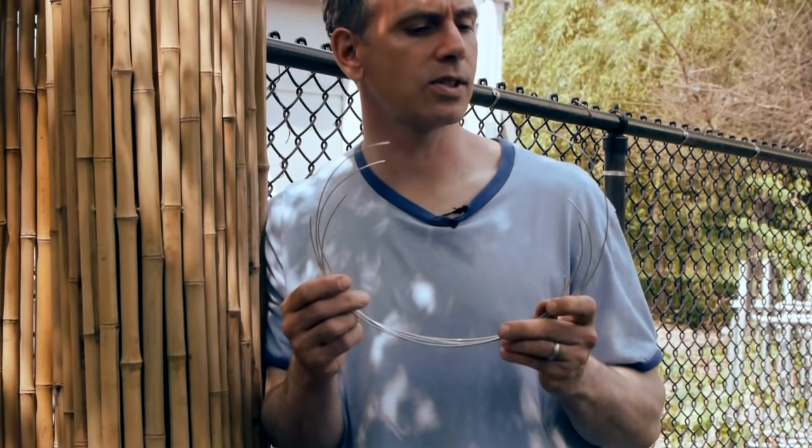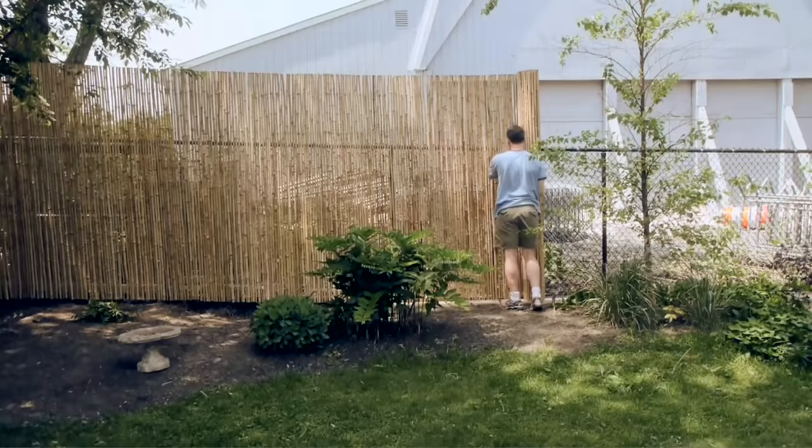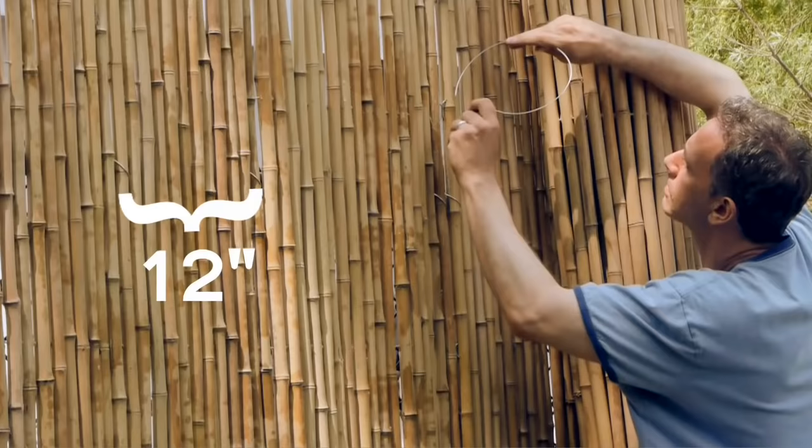I've got some pre-cut 16-gauge galvanized wire in about one-foot lengths. We're going to pass it through the fence and connect it top and bottom every 12 inches.